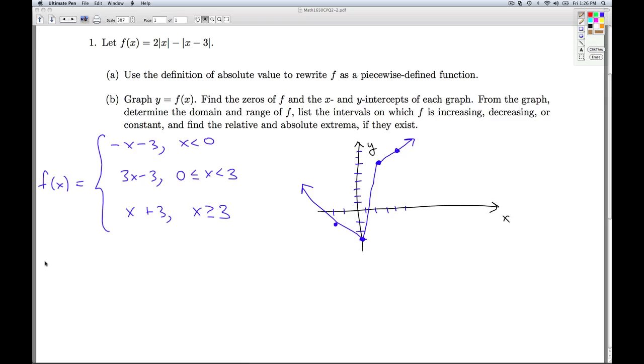All right, the zeros of f, those are the values of x which make f of x equal to 0. So looking at this graph, we're going to have a 0 from over here on this part, which corresponds to x less than 0. So if I solve this equal to 0, I'm going to get x equals negative 3. That means that we have an x-intercept, negative 3, 0.